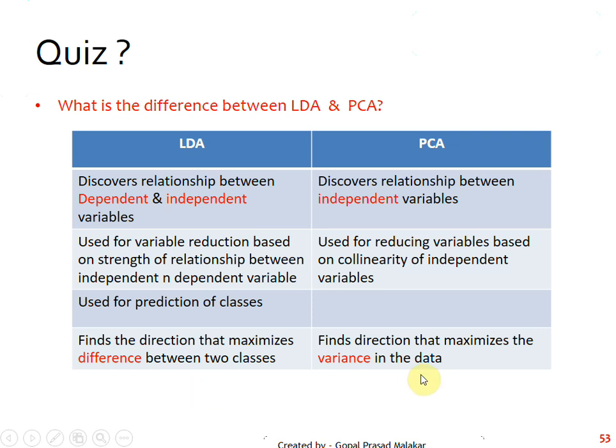And these two serve different purposes. LDA is trying to do classification and PCA is trying to create artificial variables which can explain maximum variance in the data.